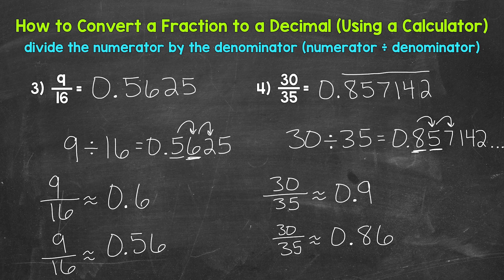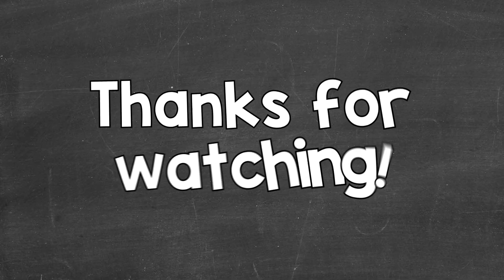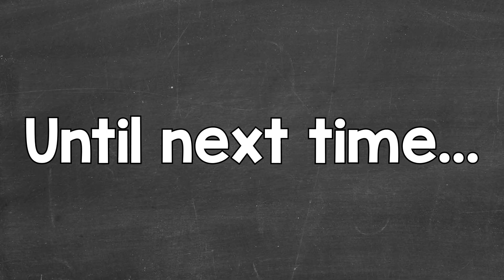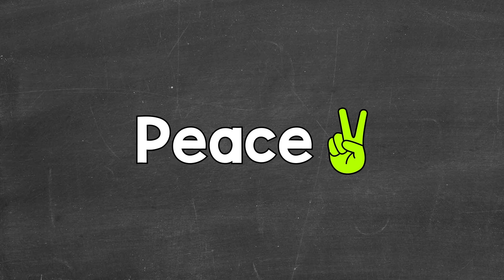So there you have it — that's how to convert a fraction to a decimal. Divide the numerator by the denominator, and if we get a repeating decimal or a long decimal, rounding is always an option. I hope that helped. Thanks so much for watching. Until next time, peace.